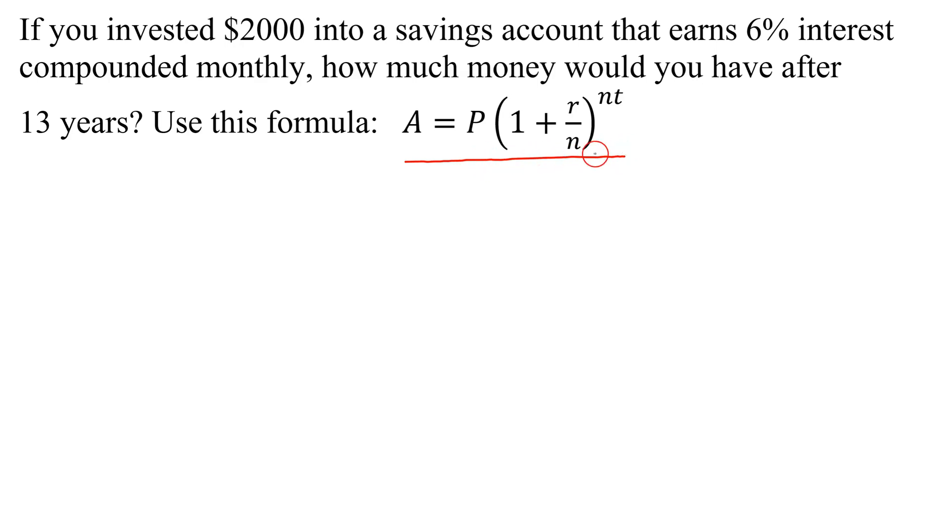So let's see if we can figure out what all these variables on the right-hand side represent. Remember, P is the principal. That's the amount you invested. So how much is the amount we invested? It's $2,000. So our principal is $2,000.